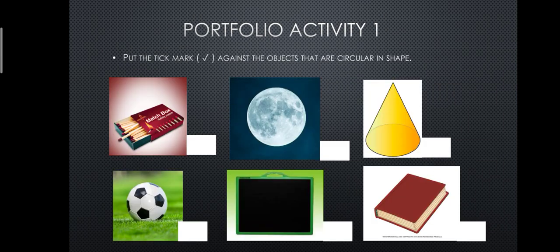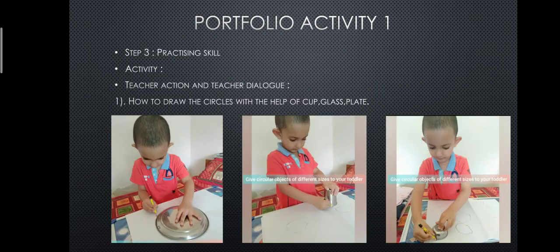In another whole class activity, the teacher asks children to put a tick mark against the objects that are circular in shape. In the first picture, there is a matchbox — children identify it is not a circular shape and mark accordingly. In the second picture, there is a moon — children already understand the circle concept and can say it is round and put a tick mark. The remaining pictures are carried out in the same way.